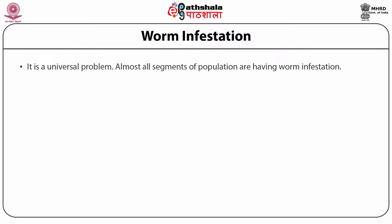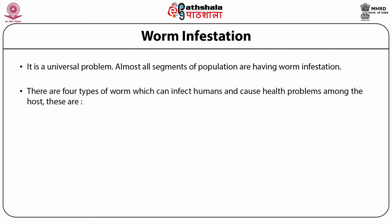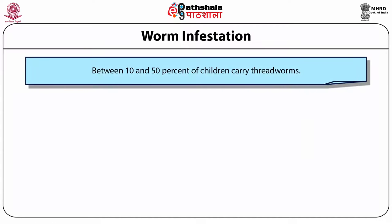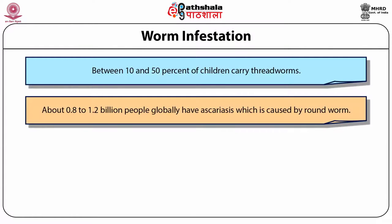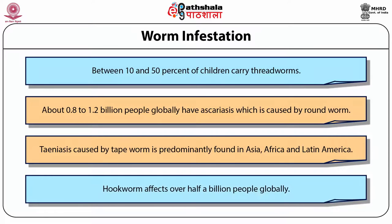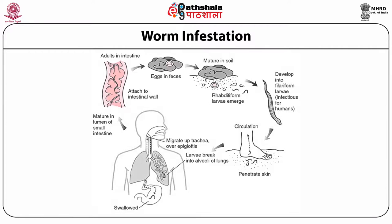Worm infestation is a universal problem; almost all segments of the population are affected. There are four types of worms which can infect humans: threadworm or pinworm, roundworm, tapeworm and hookworm. Between 10 and 15% of children carry threadworms. About 0.8 to 1.2 billion people globally have ascariasis, caused by roundworm. Taeniasis, caused by tapeworm, is predominantly found in Asia, Africa and Latin America. Hookworm affects over half a billion people globally.